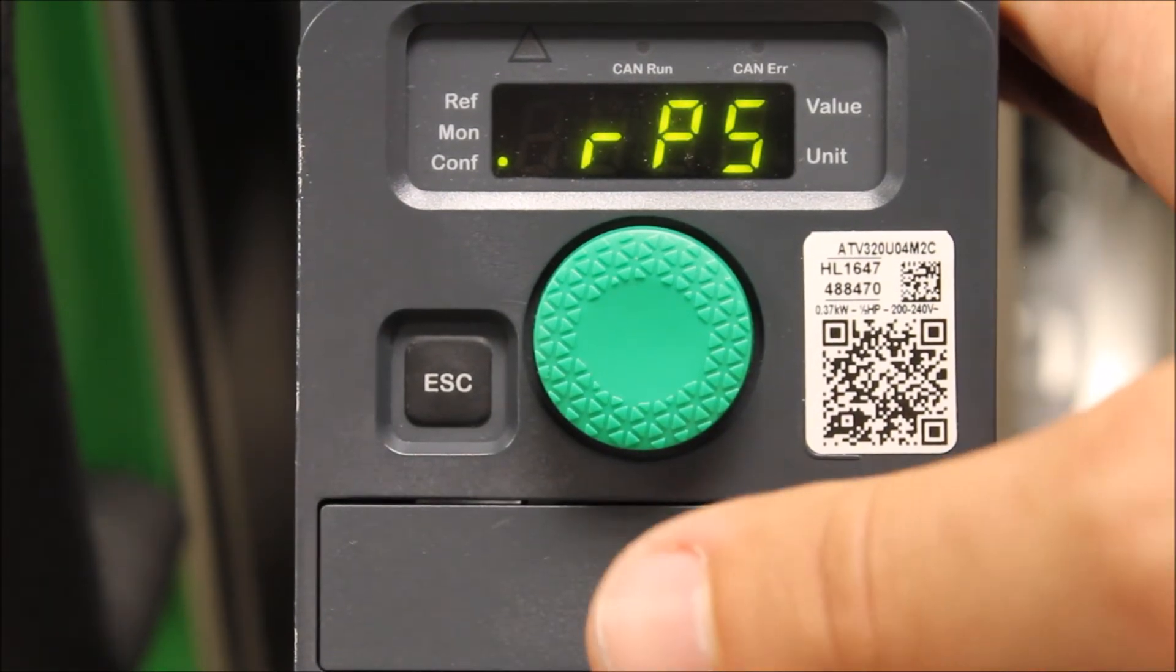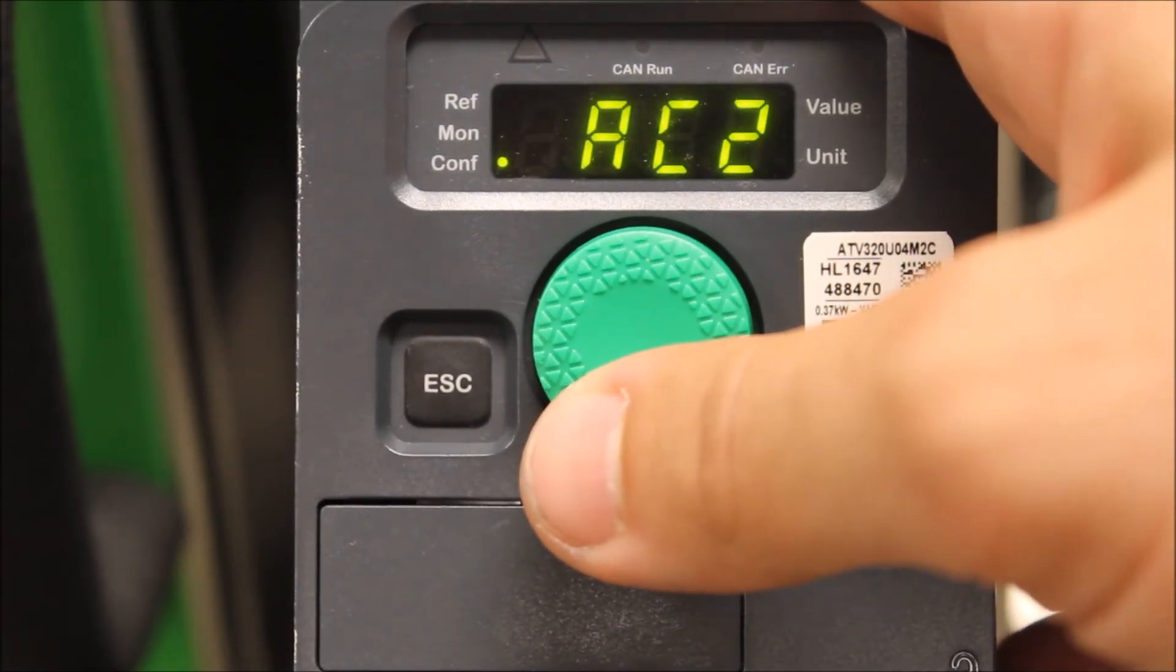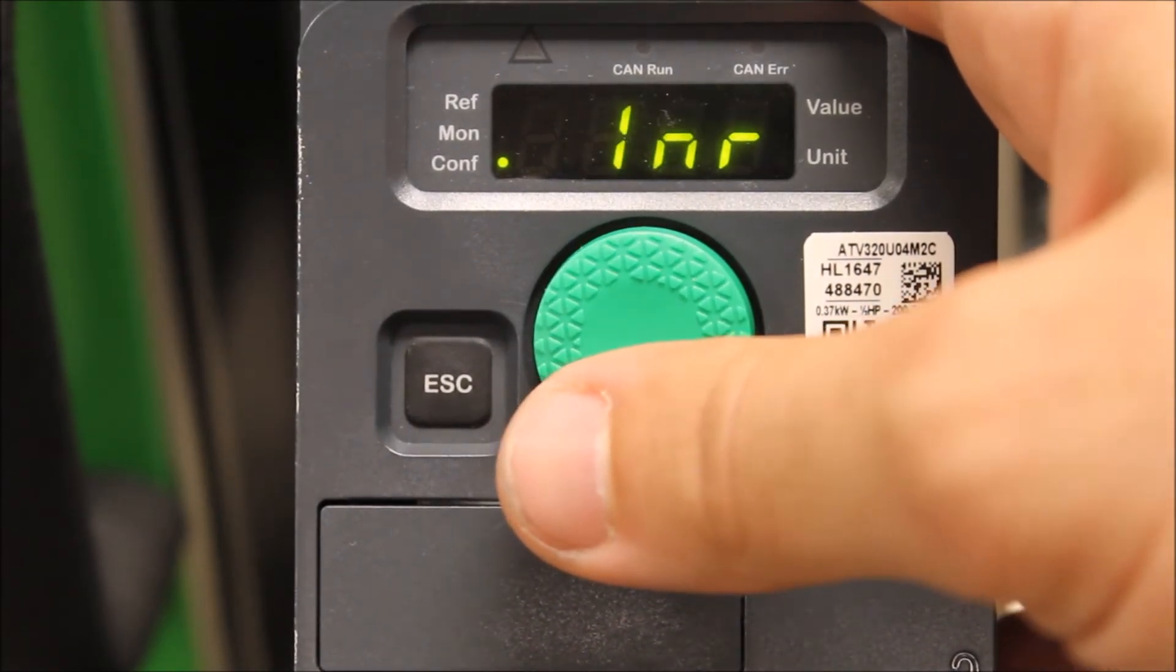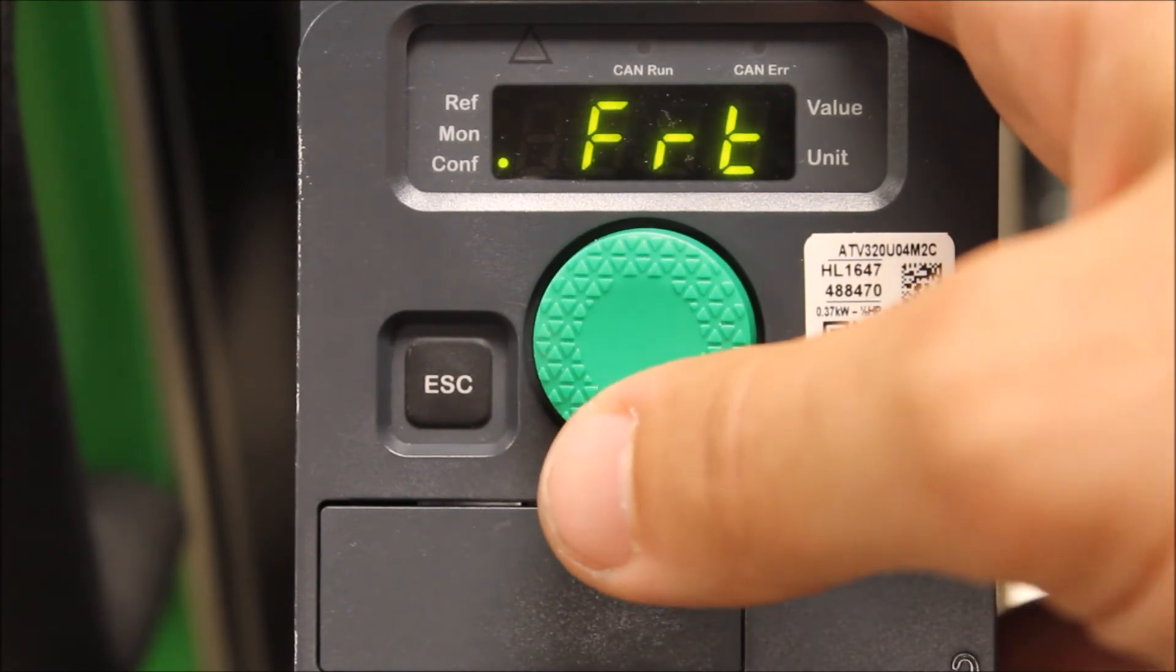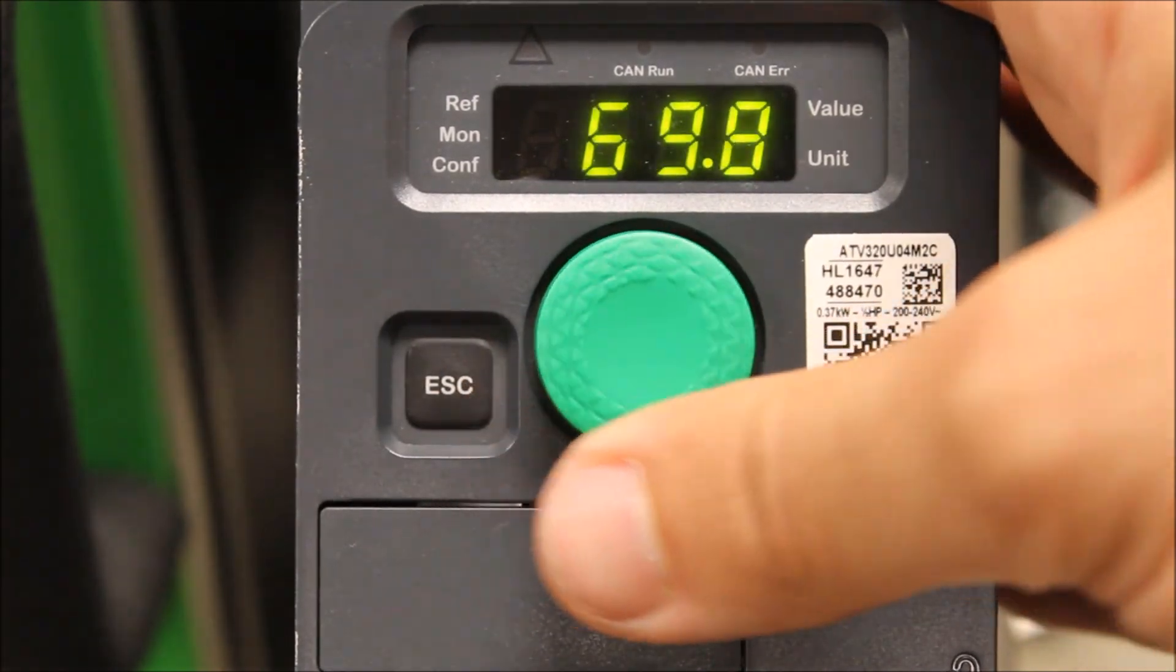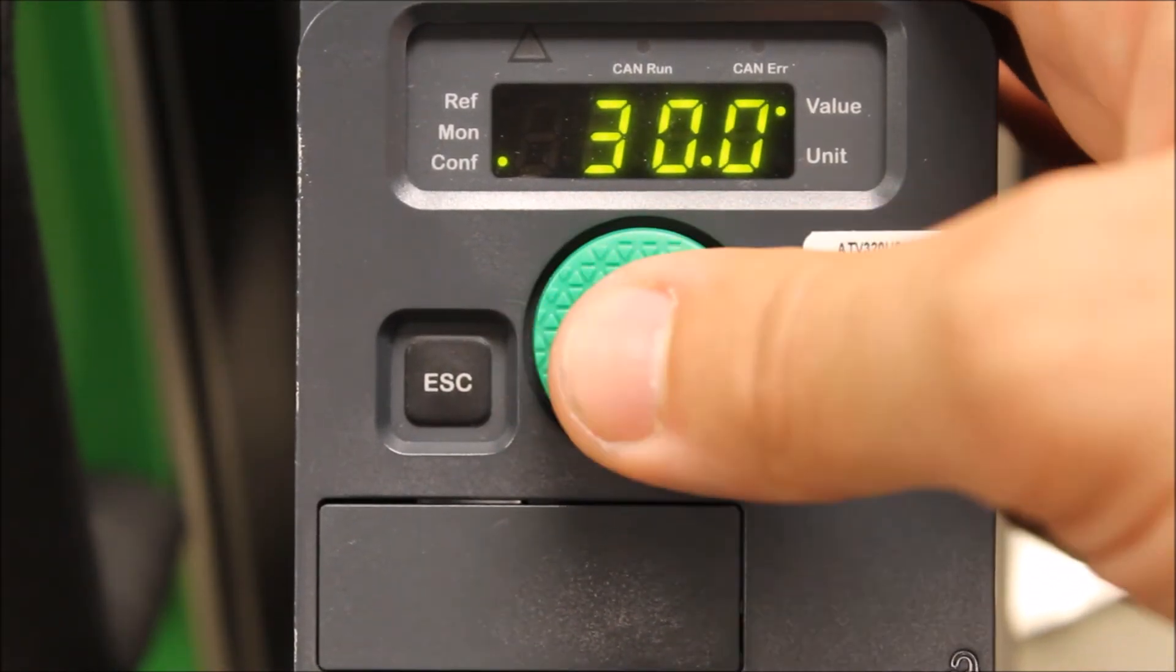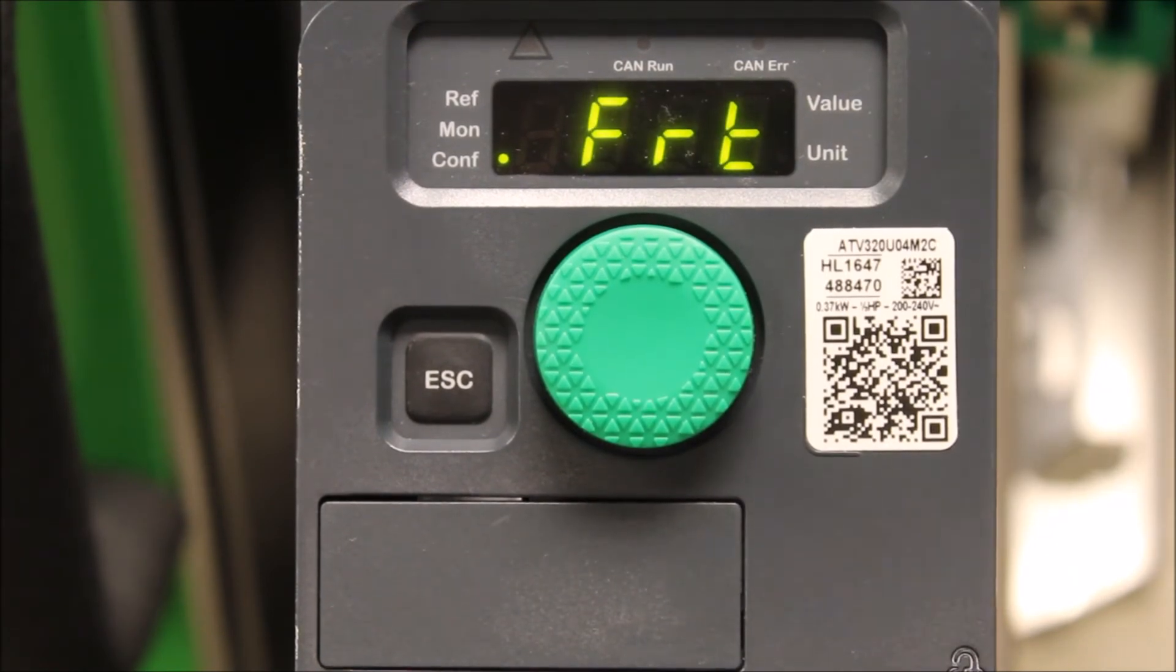I mentioned is using a frequency threshold, and that's parameter FRT. Let's go ahead and find that. This is a frequency threshold, so let's make it 30 Hertz as an example. What that means is from 0 to 30 Hertz